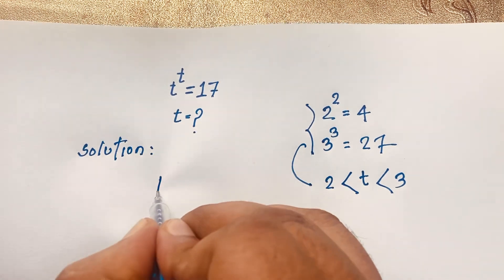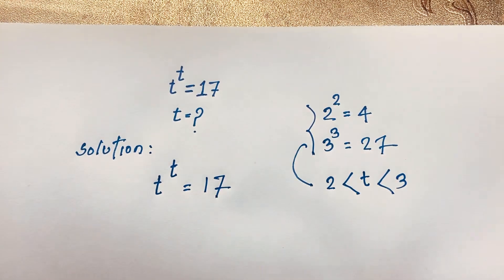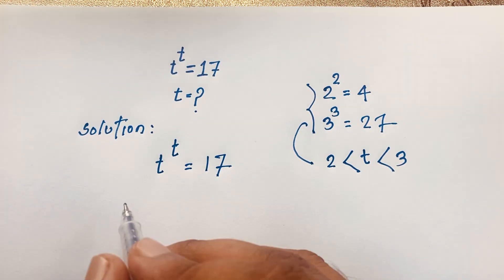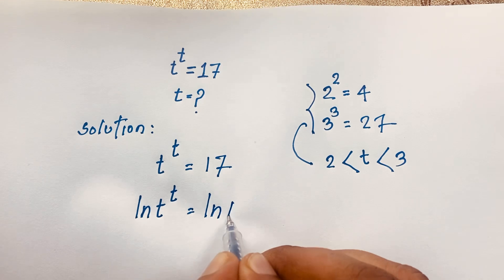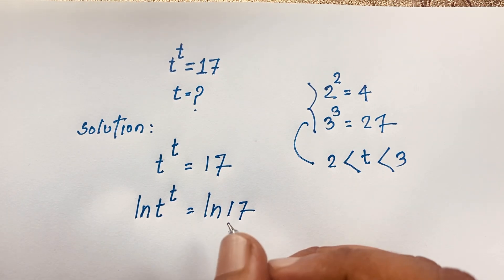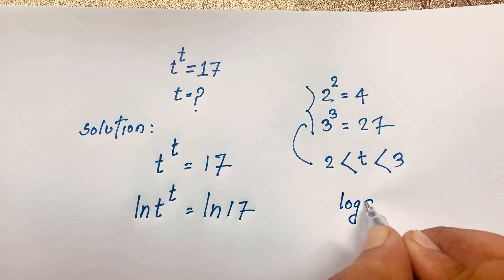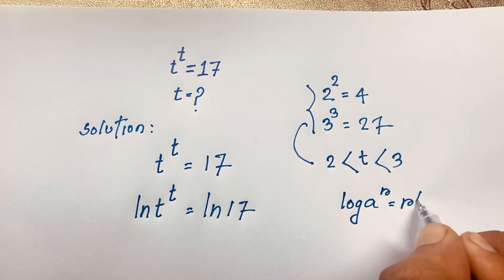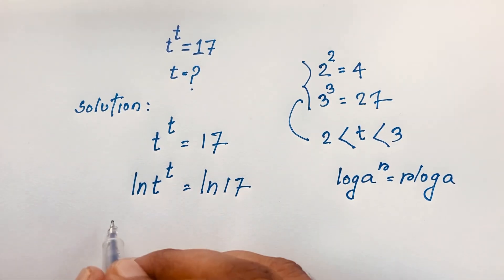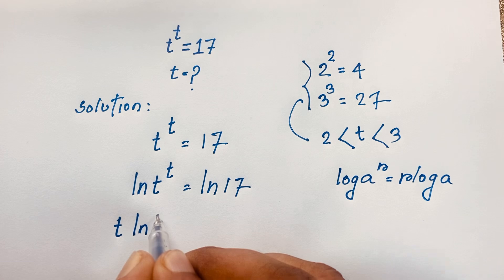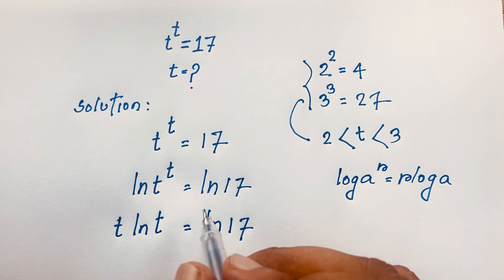Our question is t to the power t is equal to 17. Now I apply ln to both sides: ln(t^t) = ln(17). We know that ln(a^r) = r·ln(a), so applying this formula, t moves in front and it becomes t·ln(t) = ln(17).